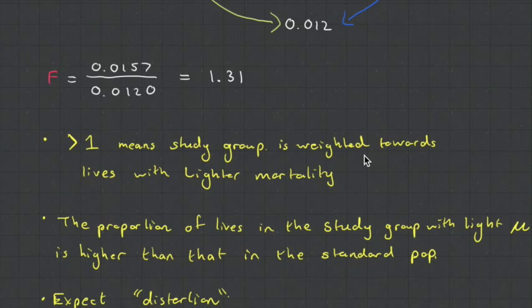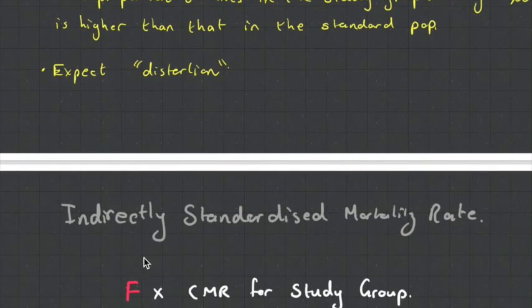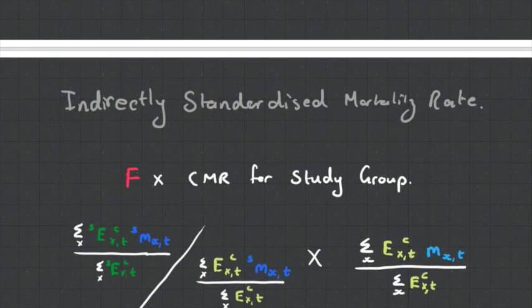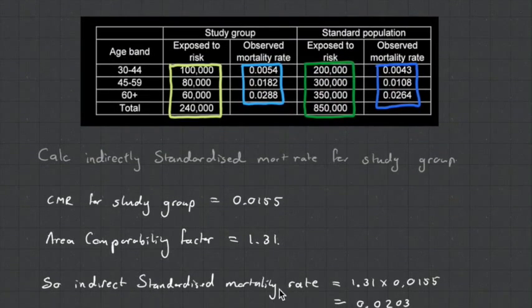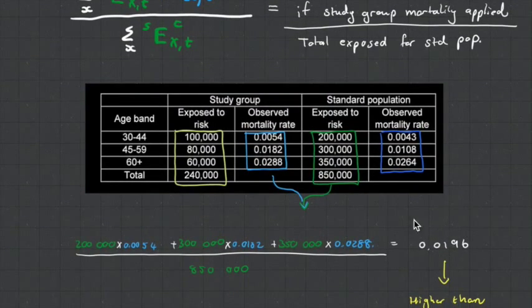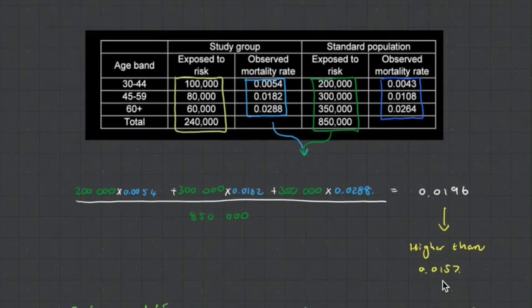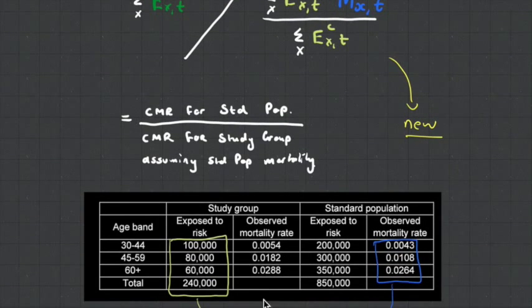That's not all that this area comparability factor is used for. We can also use it to calculate the indirectly standardized mortality rate. What we do is we simply multiply that by the crude mortality rate for the study group. What this therefore does is it gives us the indirectly standardized mortality rate, which we'll see is very similar to the directly standardized one. But remember, the direct one required a lot of data. This one doesn't require that much data. It's just the light blues that are hard to get to.